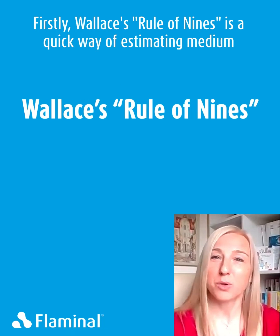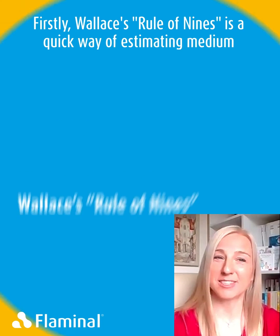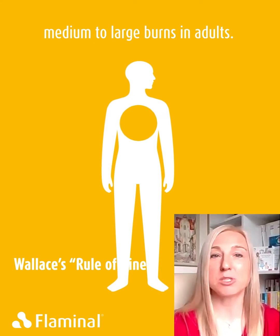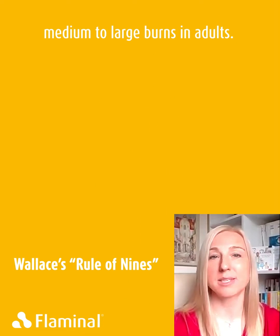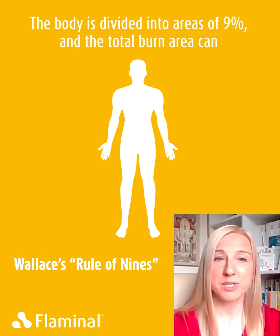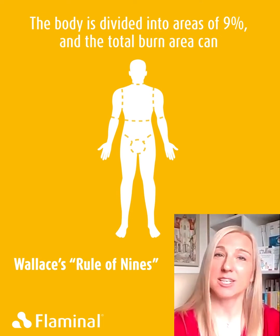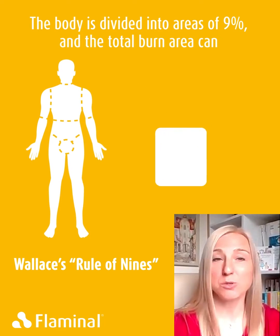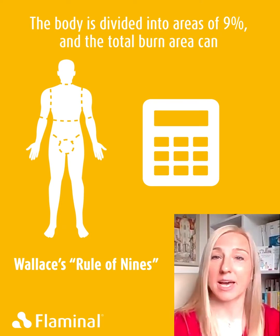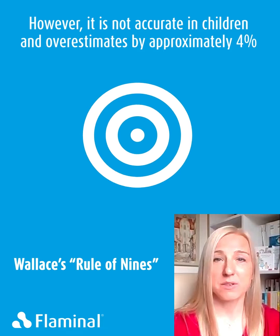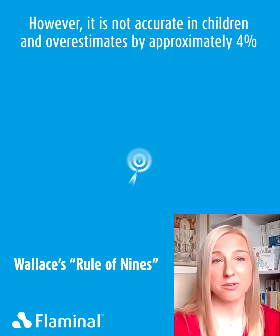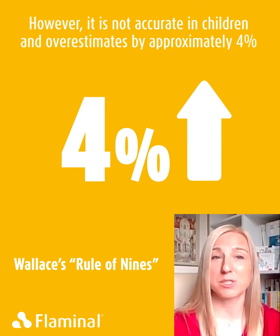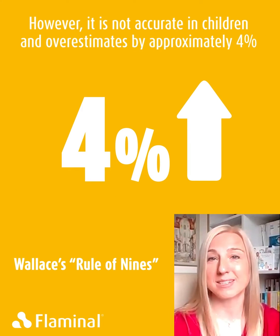Firstly, Wallace's rule of nines. It's a quick way of estimating medium to large burns in adults. The body is divided into areas of nine percent and the total burn area can be calculated. However, it is not accurate in children and overestimates by approximately four percent in adults.